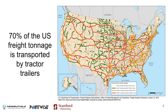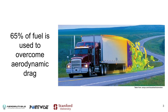In the US, over 70% of freight tonnage is moved by tractor trailers, driving the vast network of highways going from one side of the country to the other. These vehicles tend to stay the majority of the time at highway speeds, and when moving at that speed, over 65% of the fuel they use goes towards overcoming aerodynamic drag. It's important to understand where this aerodynamic drag is coming from, and computational tools are a very good approach to figure this out.